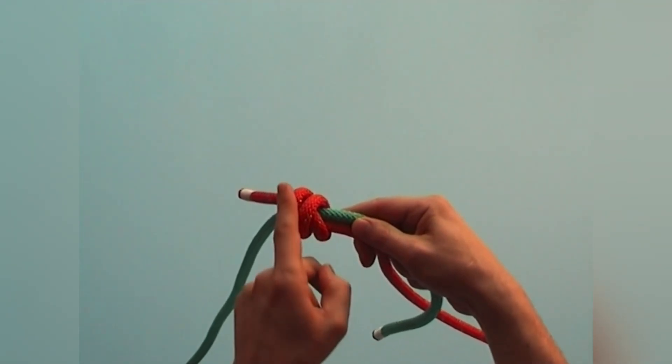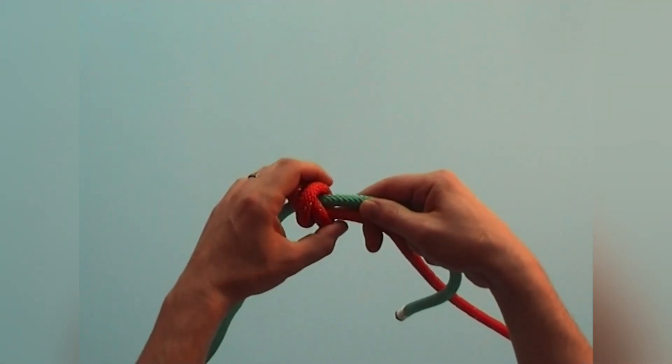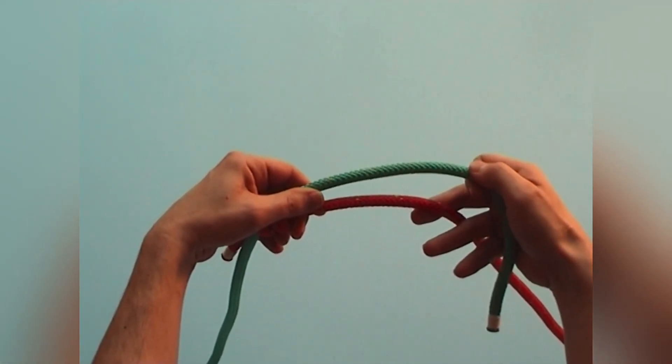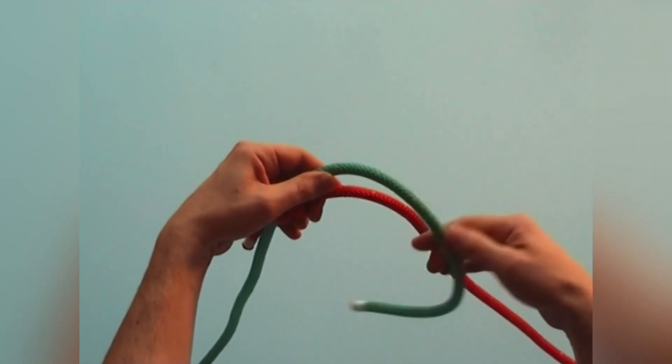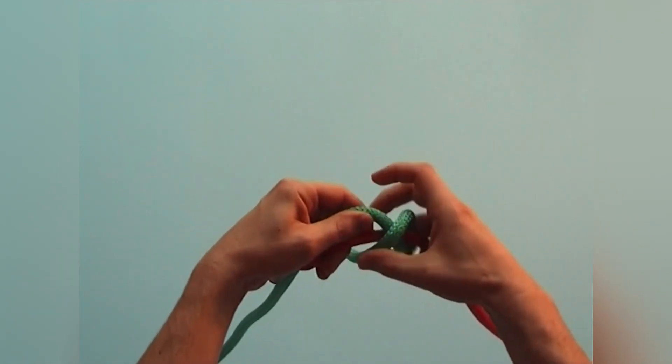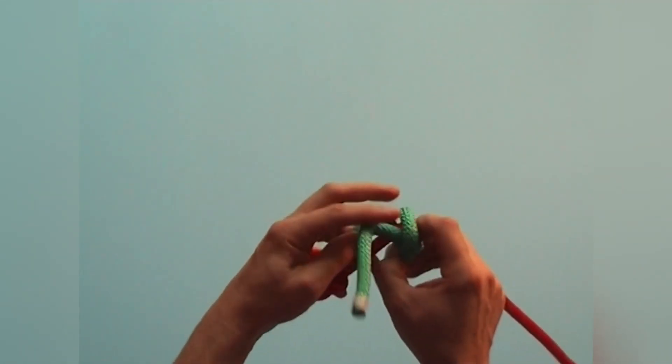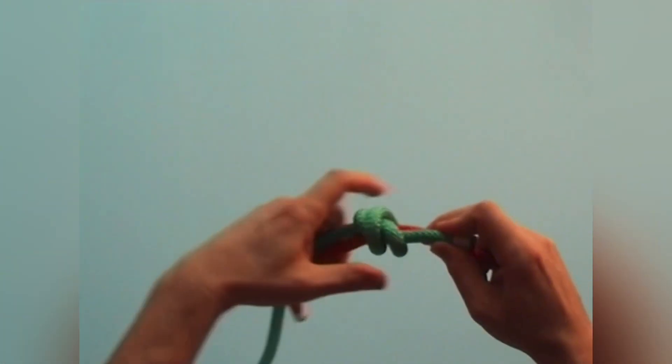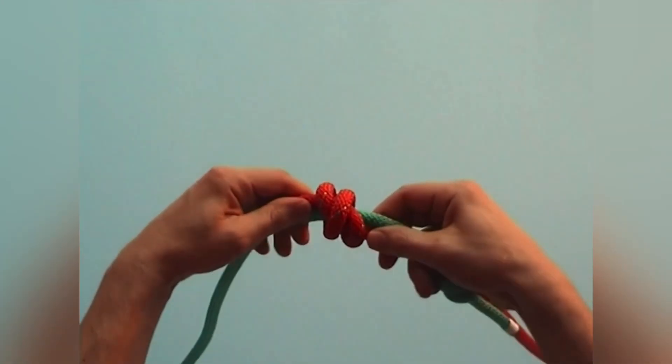If I've made the turns away from me with the first scaffold knot, then I make them in the opposite direction with the second scaffold knot. That way the two knots connect more evenly.